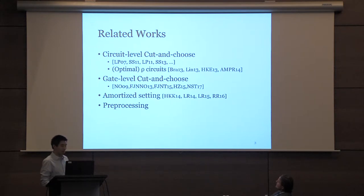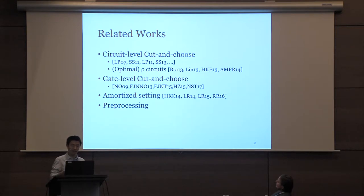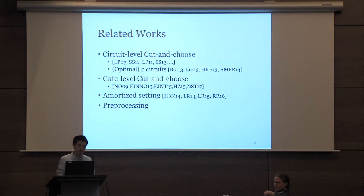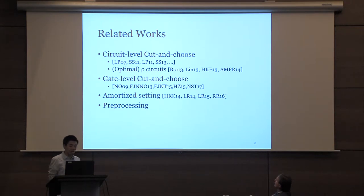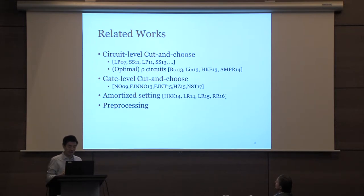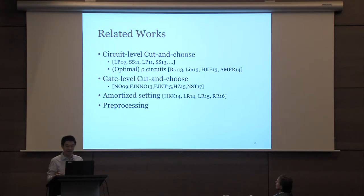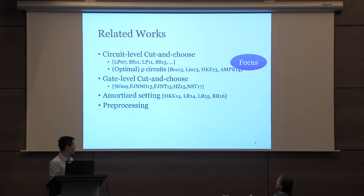Let me give a high-level view of the previous paradigms for 2PC. We have circuit-level cut-and-choose, which is based on garbled circuits, started with Lindell-Pinkas 2007. The most recent line of work achieves a linear number of circuits with a linear statistical security parameter. We also have gate-level cut-and-choose starting with TCC 2009, also known as LEGO, and other protocols for the amortized and pre-processing settings. In this paper, we focus on circuit-level cut-and-choose.